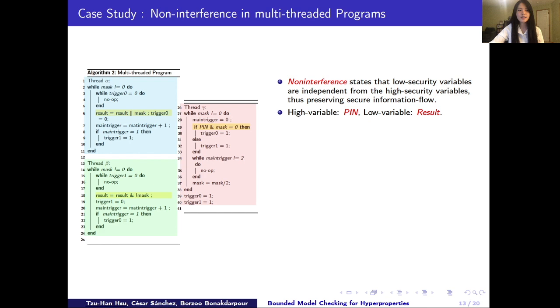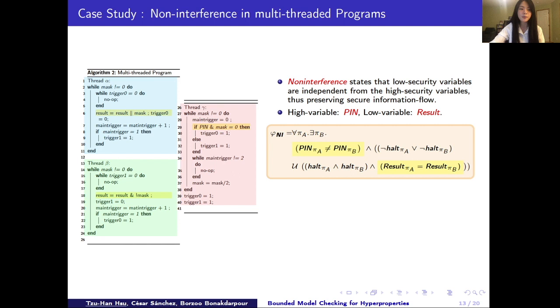Thus, the hyperLTL formula for this problem is as follows. Notice that because this is a terminating program, so we use halting condition here. That's why we have those halts in the formula.